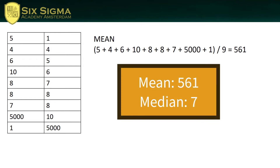What is causing that big difference? The mean is much more sensitive to extreme values than the median. It is much more influenced by this 5000, whereas the median is not influenced by this 5000 at all.